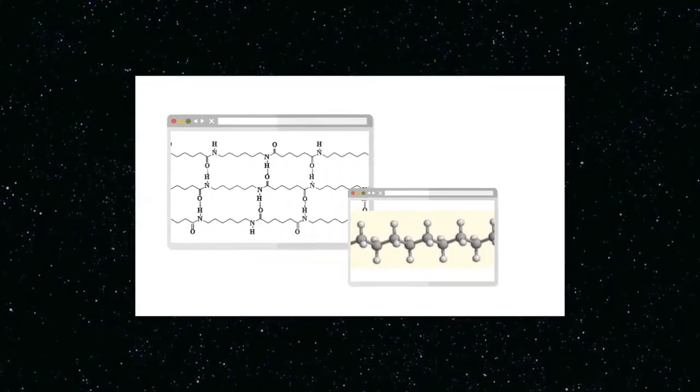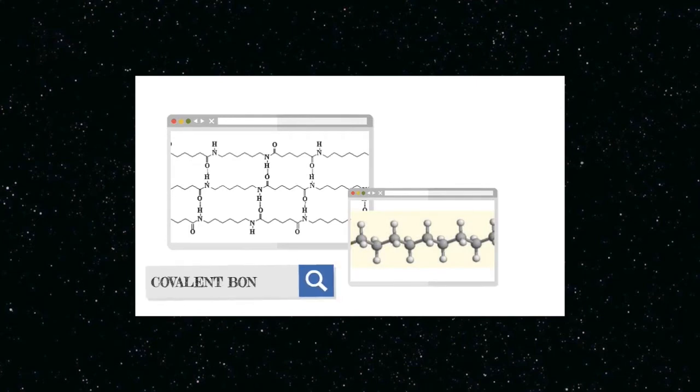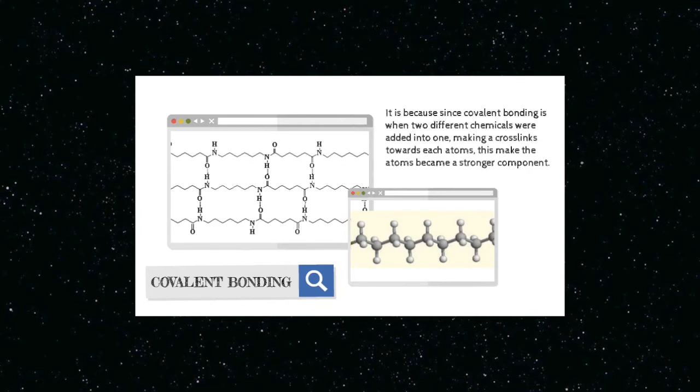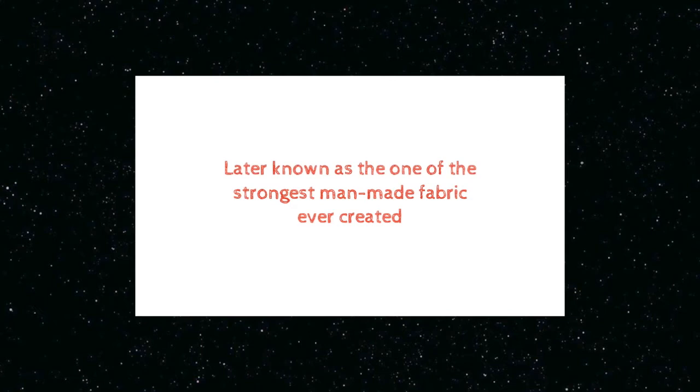The type of bonding that's present in nylon is covalent bonding because when two different chemicals were added into one, it makes a cross-link toward each atom, making the atoms become a stronger component. It makes nylon into a different material that later became known as one of the strongest man-made fabrics ever created.